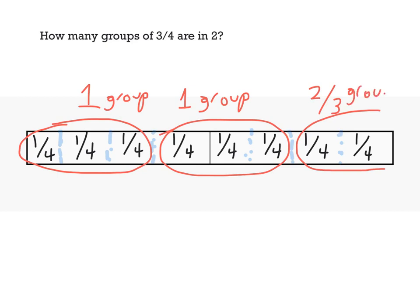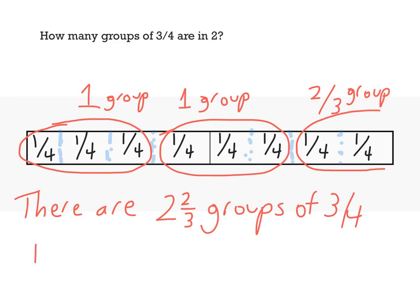Or if I want to write this as a sentence, there are two and two thirds groups of three quarters in two. If I want to write that as a division statement, I'm saying two divided up into groups of three quarters is two and two thirds.